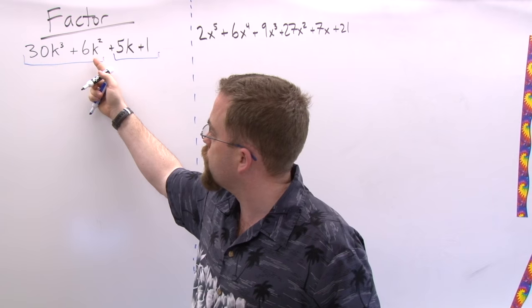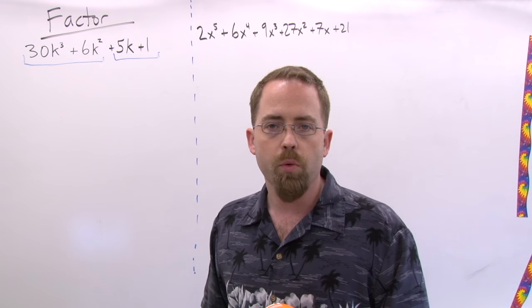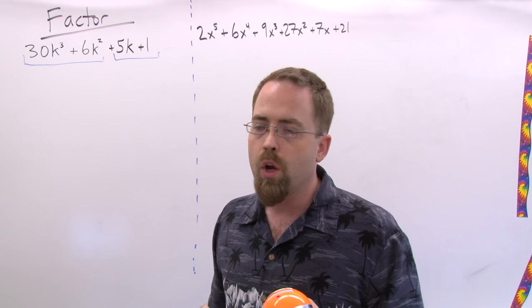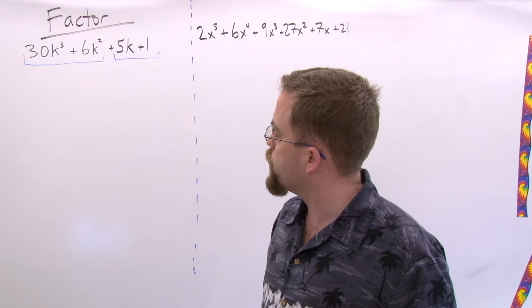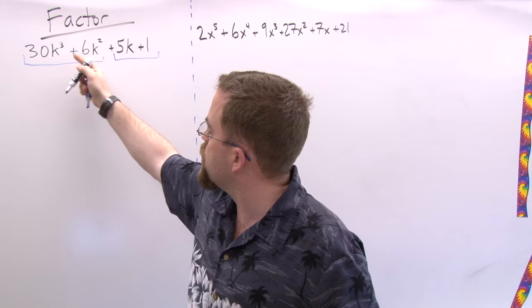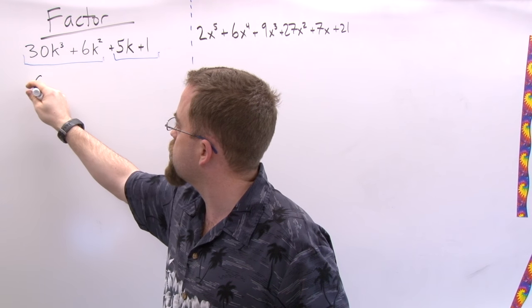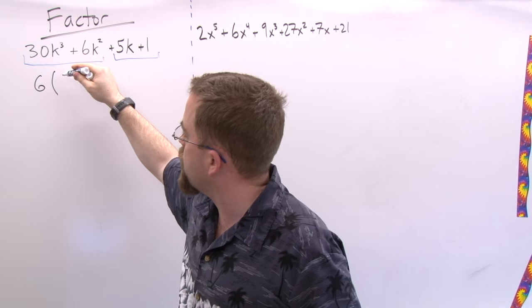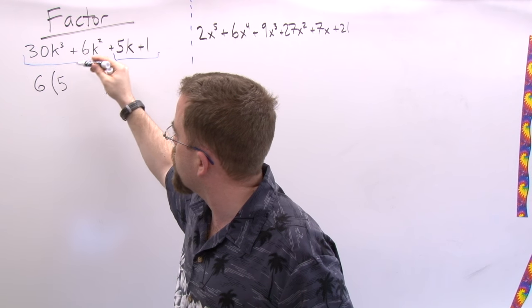So what we want to do is look at these two terms here and ask what is the greatest common factor, the normal question that we ask in factoring. What is the greatest common factor between those two? Well in terms of numbers I can definitely take a six out, and then what's left? Well this is five times that and this is one times that.